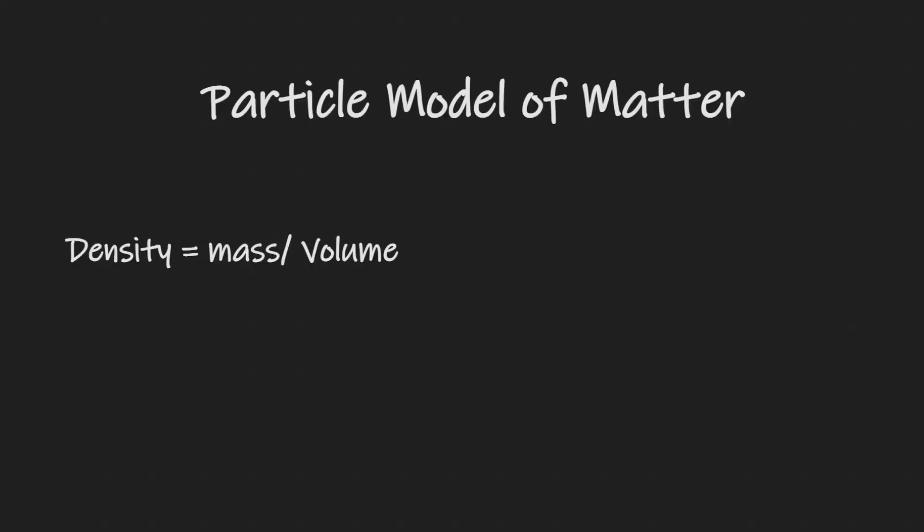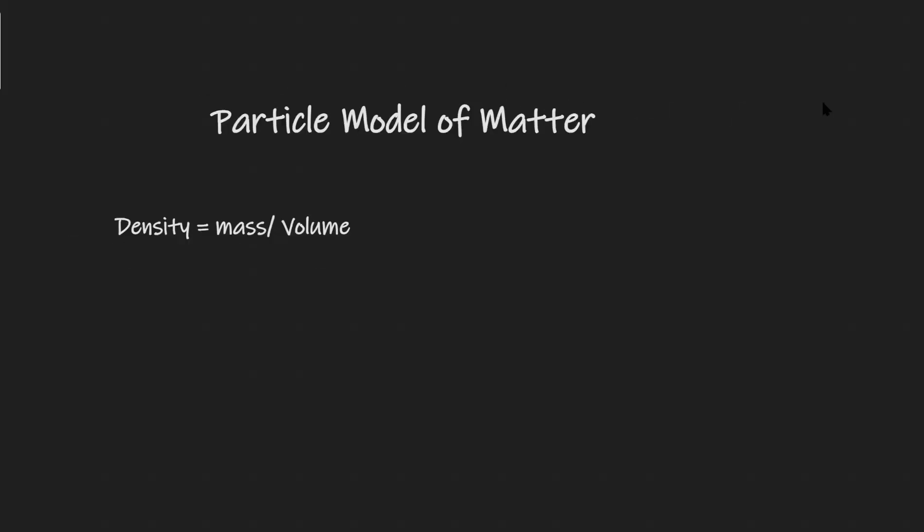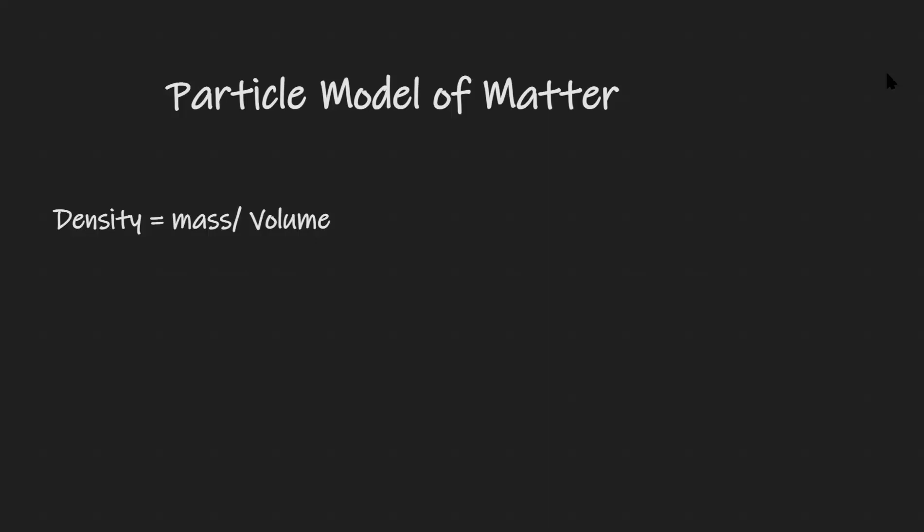Let's revise the particle model of matter. I'm going to be following the A2A physics specification, however, as always, these videos are applicable to all exam boards. We're going to start off with the equation that density is equal to mass over volume. The symbol for density in physics is typically this Greek letter rho, and this is just equal to the mass divided by the volume. Mass is measured in kilograms as a standard unit, and volume in meters cubed. This means the unit for density will actually be equal to kilograms per meters cubed.